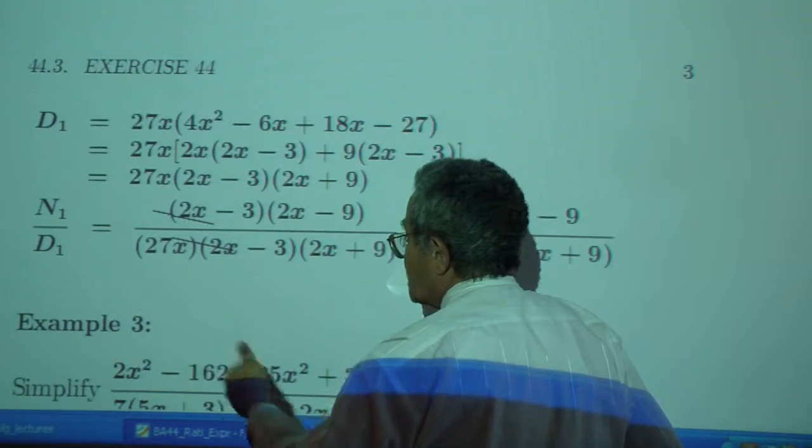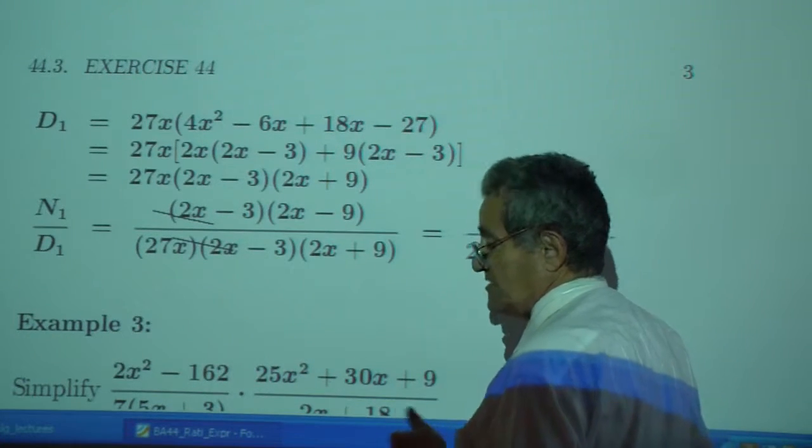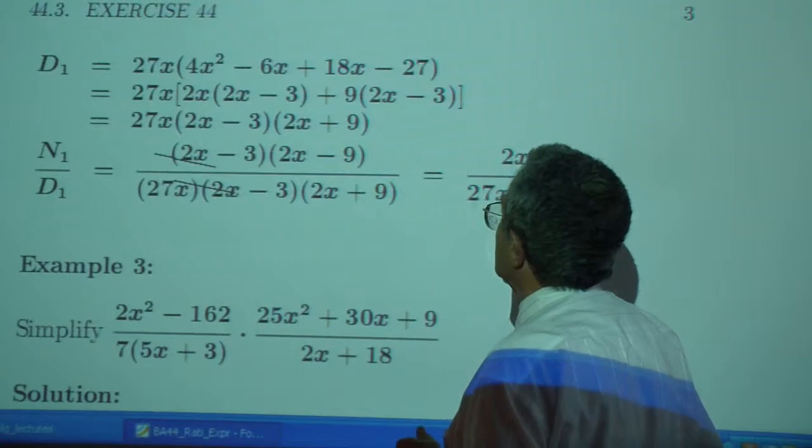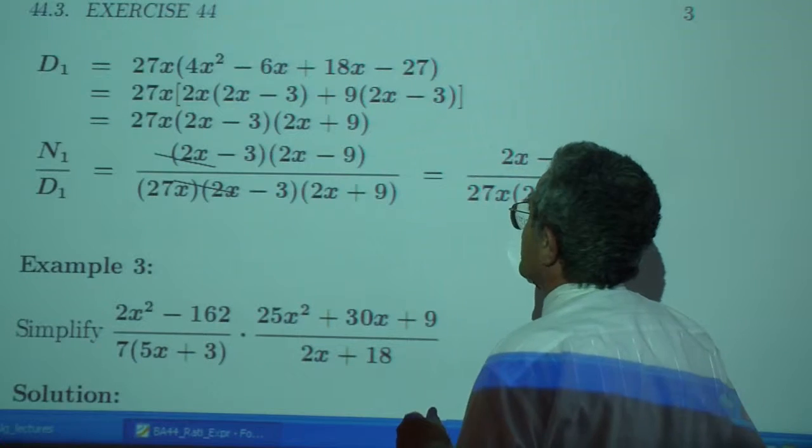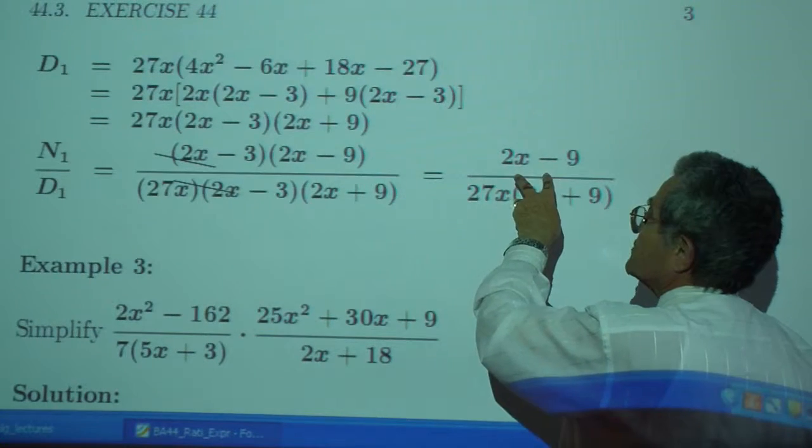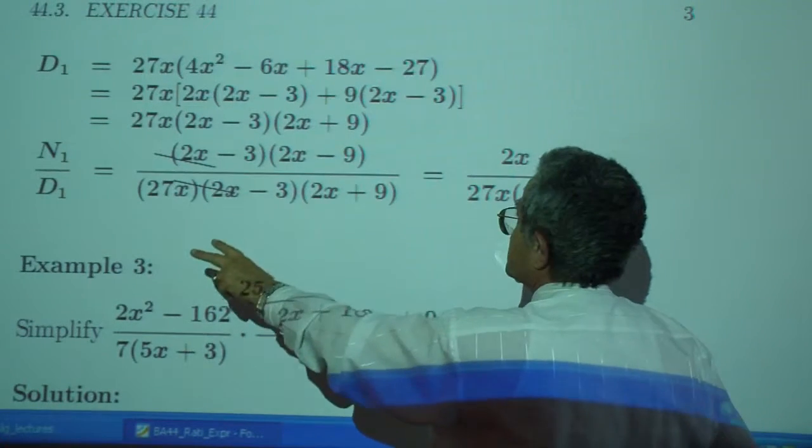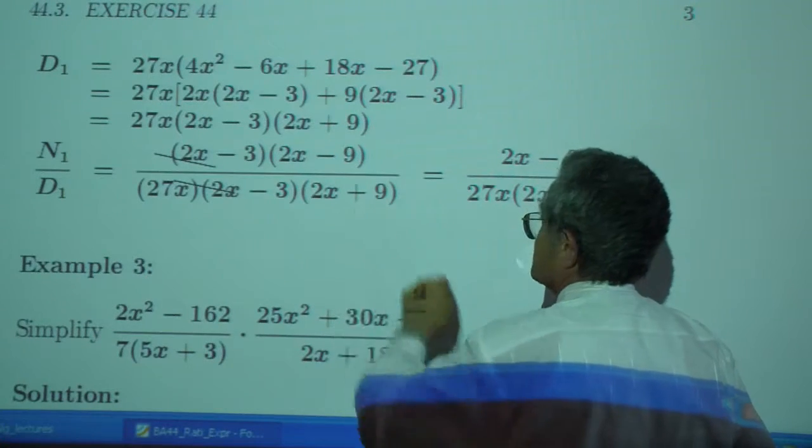These lines moved when I made an adjustment. And anything else? No, I guess that's about it. So, we are left with 2x minus 9, 27x, and 2x plus 9.